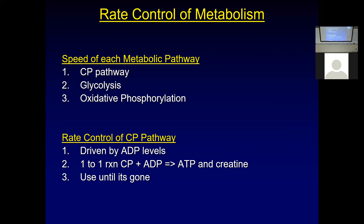The thing that primarily controls the rate of the creatine phosphate pathway is ADP. As ADP levels go up, it drives the reaction. As they go down, it shuts off or inhibits the reaction. It's a simple one-to-one reaction: if you've got creatine phosphate and ADP, it drives in this direction. If ATP levels are high, we don't need to break this down. This pathway is used until creatine phosphate reaches a critically low level and won't come back until we stop exercising.